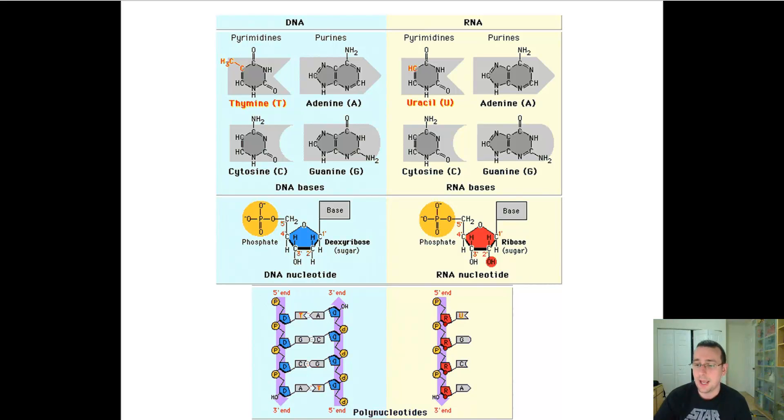Both have carbon, hydrogen, oxygen, nitrogen, and phosphorus in their composition. Both have sugar and phosphate as part of the backbone. Both have a nitrogenous base as part of their structure as well.